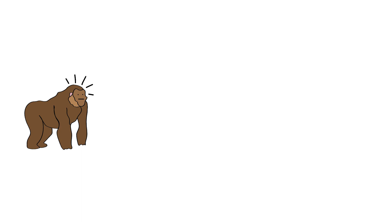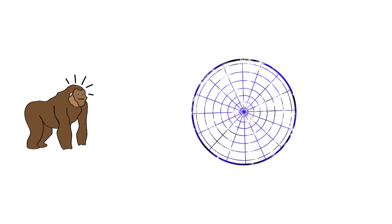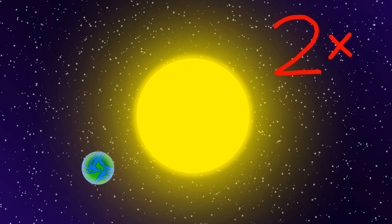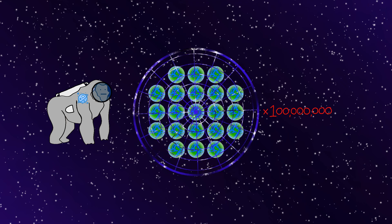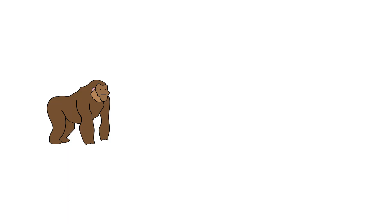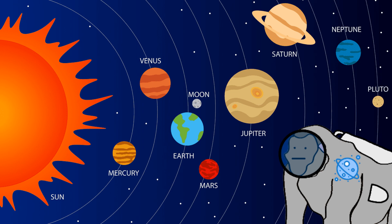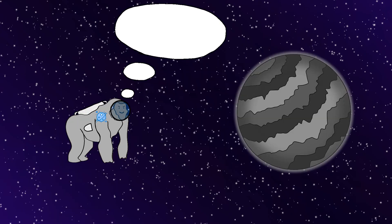First thing Monkey realizes is this sphere needs to be absolutely massive, like twice the size of Earth's orbit around the sun. And Monkey's thinking, okay, that's big enough to fit 100 million Earths inside. And Monkey needs an insane amount of material. So Monkey looks around the solar system, and Monkey's eyes land on Mercury. And Monkey thinks, perfect Mercury, you're about to become the ultimate sacrifice for this project.